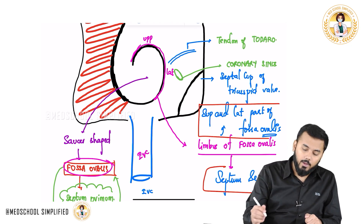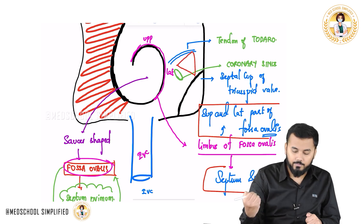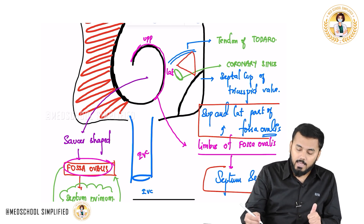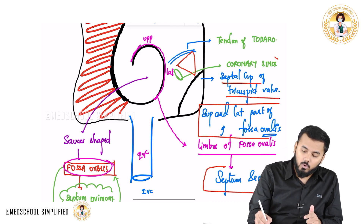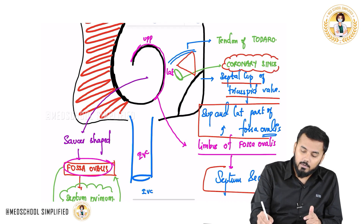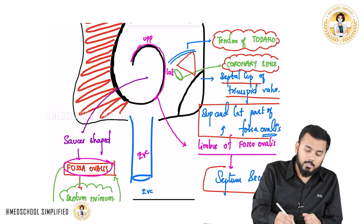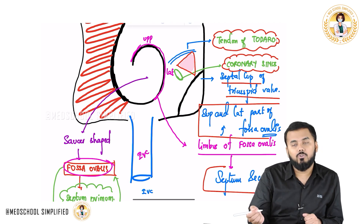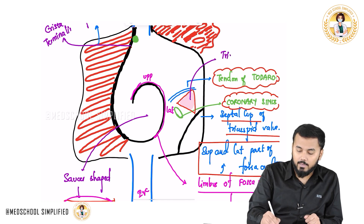This is a tendon that is located here. If you closely look, you can find a triangle. This triangle has three borders: one is the septal cusp of the tricuspid valve, second is the coronary sinus, and third is the tendon of Todaro. All three together form a small triangle called as the Triangle of Koch.